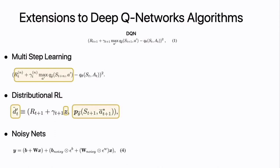The last extension is called Noisy Nets. Noisy Nets replaces the greedy strategy by adding an additional noisy layer — adding random noise to the network. Over time the network will learn to ignore the noise, which is actually useful because at the exploration phase, if you are able to ignore the noise in your data, it will be really useful.